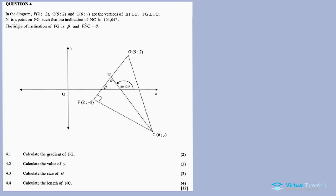N is a point on FG such that the inclination of NC is 104.04 degrees. The angle of inclination of FG is beta, and angle FNC is equal to theta. This is the information given, as well as the sketch below.